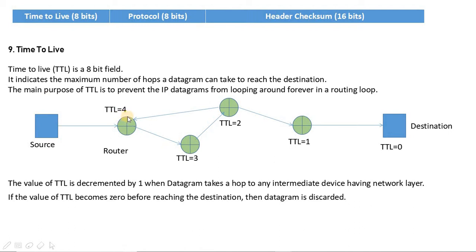The second case is: for example, the router has received a packet with TTL 4, but it does not know the actual direction of this packet. In that case, the router has a routing table. It will look it up, but it has no idea of where to send the packet.